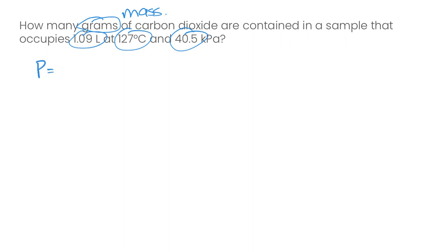We know our pressure is 40.5 kPa. We know our temperature is 127 degrees Celsius, but we also know we need to convert that into Kelvin. So that is equivalent to 400 Kelvin. We also know volume is 1.09 liters. We know our gas constant is 8.31, but we don't know the number of moles.